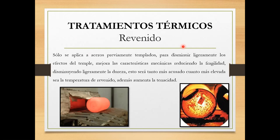Ese proceso se llama revenido, y solo se aplica a aceros previamente templados. Tengo que tener un acero templado para poder hacer un revenido. Preguntas como esa van a ser las preguntas de certamen: por ejemplo, ¿generaría un revenido a una pieza que no es templada anteriormente? La respuesta es no. Usted no puede generar un revenido si al acero no se le ha aplicado un temple anteriormente.